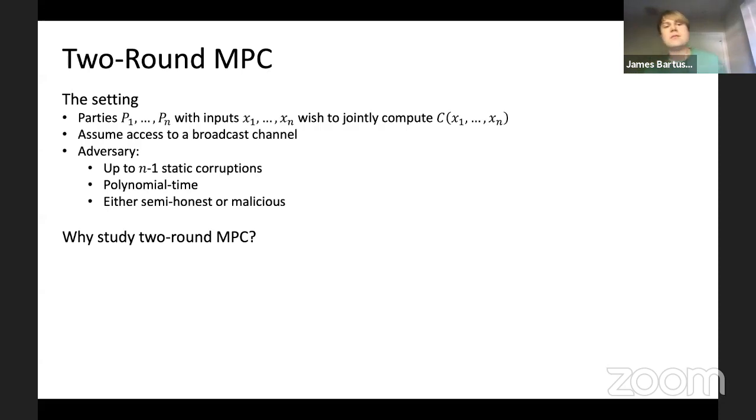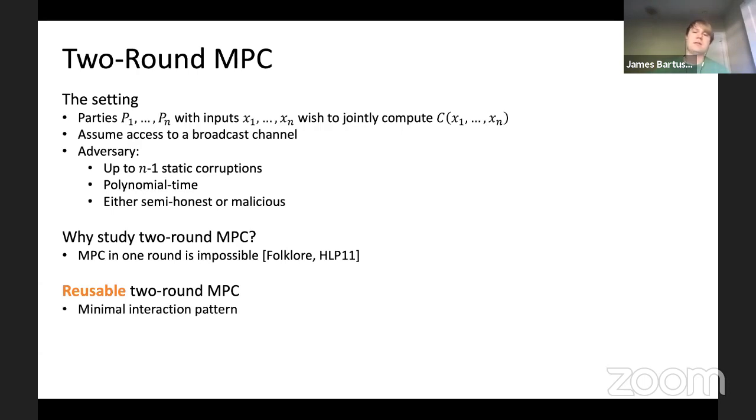Why study two-round MPC? Interaction is really one of the major measures of efficiency you might want to optimize in MPC, along with communication and computation. Two-round MPC represents the most optimal thing you can do in terms of interaction, because MPC in one round is impossible to achieve for general functionalities.